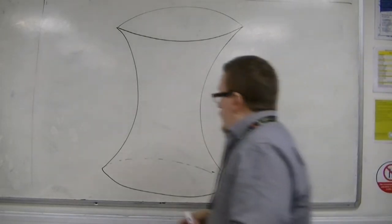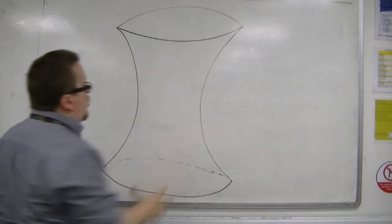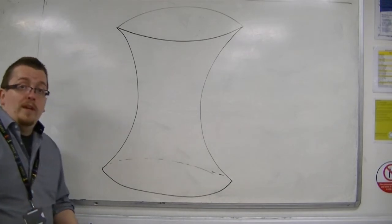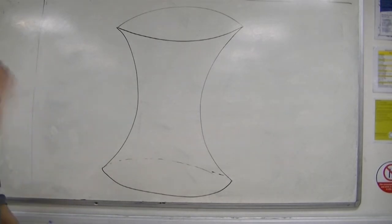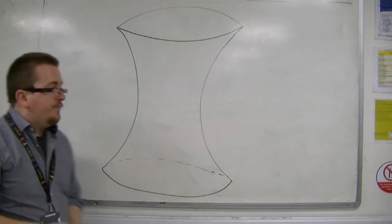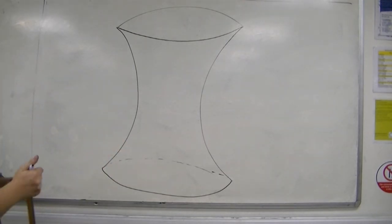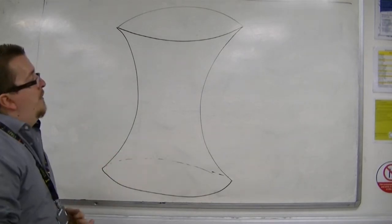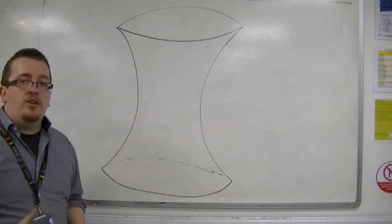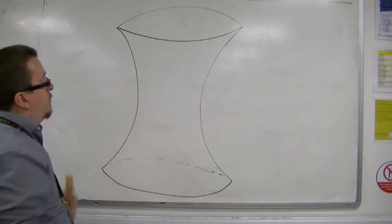A hyperboloid is a shape you may recognize as being the shape of a nuclear cooling tower, for example. It's a very strong, rigid structure. And you can see it as being where conics come from by thinking of taking slices of this three-dimensional shape at different angles.